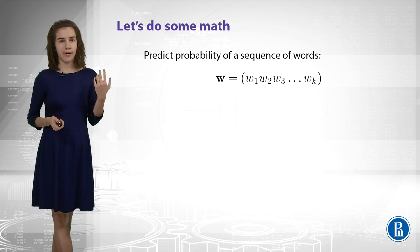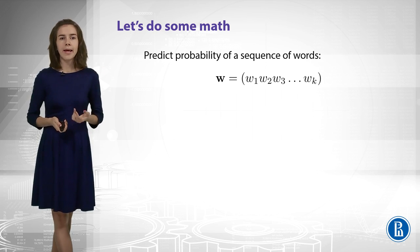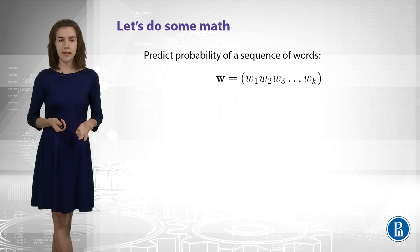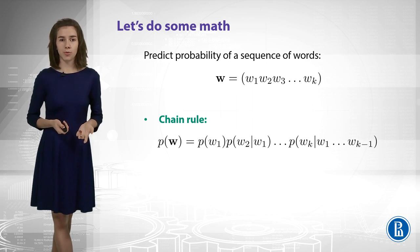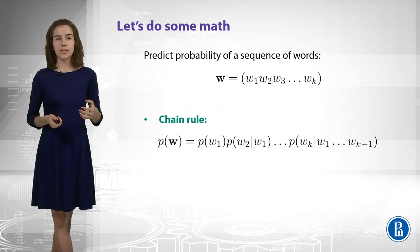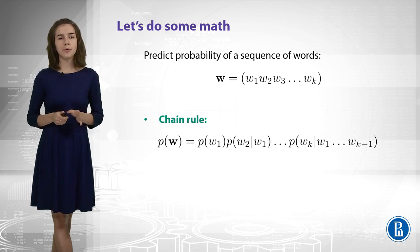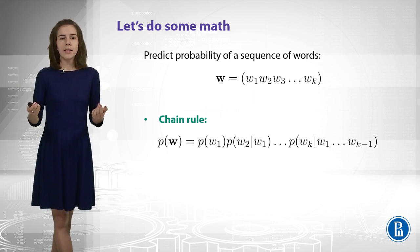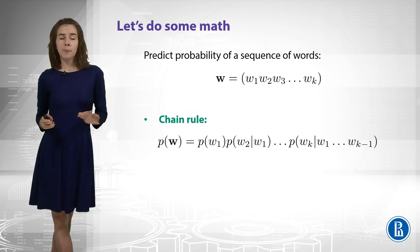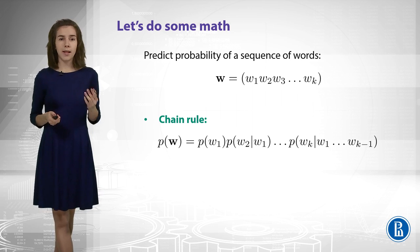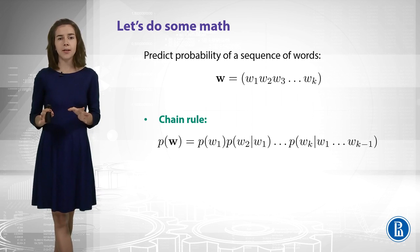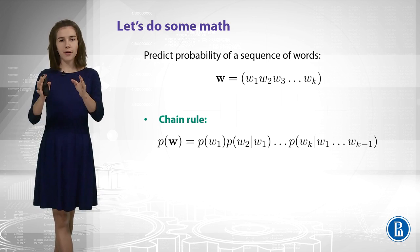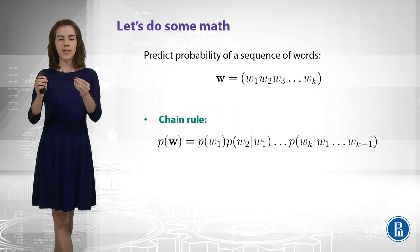So, here this is our sequence of k words. And we would like to estimate this probability. And we can apply chain rule, which means that we take the probability of the first word, and then condition the next word on this word, and so on. So, that's already better. But what about this last term here? It's still kind of complicated. Because the prefix, the condition there, is too long.